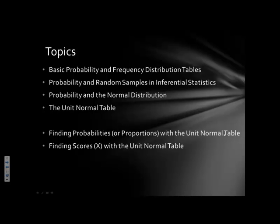The topics covered in this lecture are: how to determine probability using frequency distribution tables, which should be review from Chapter 2; probability and random samples in inferential statistics; and probability in the normal distribution. We'll focus only on the normal distribution because the unit normal table is only valid when we have a normal distribution. Then we'll calculate probabilities associated with specific x values, and find x values associated with specific probabilities using z-scores and the unit normal table.